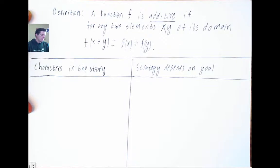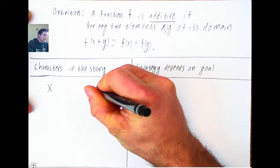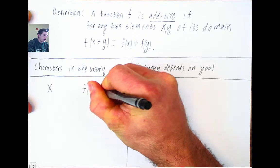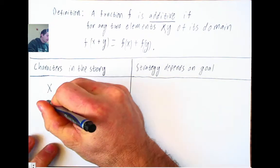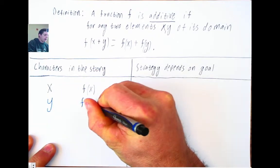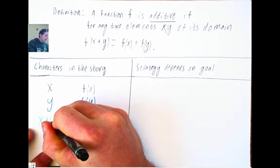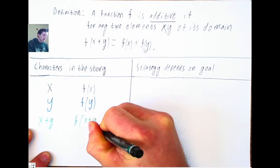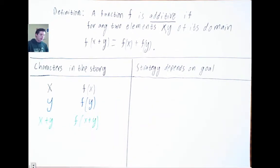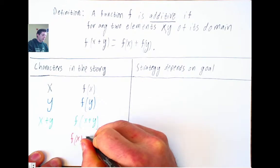So I wanted to first make a list of characters in the story of showing that a function is additive. Certainly x will be a character in the story, and the thing that f turns x into, f of x, is a character in this story also. Now y, I'm going to write in blue, and f of y, the thing that f turns y into, is also a character in the story. Next, x plus y appears in this equation, and f turns that object, x plus y, into something, so that is yet another character in the story. And there is another character, and that is the sum of these two guys, f of x plus f of y.